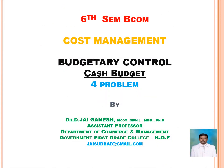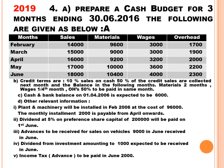Students, let us solve the fourth problem, which has come for 2019. Prepare a cash budget for three months ending 30th June 2016. We have five months total — February, March, April, May, and June — but we need to prepare the cash budget only for three months: April, May, and June. February and March are given as additional information.